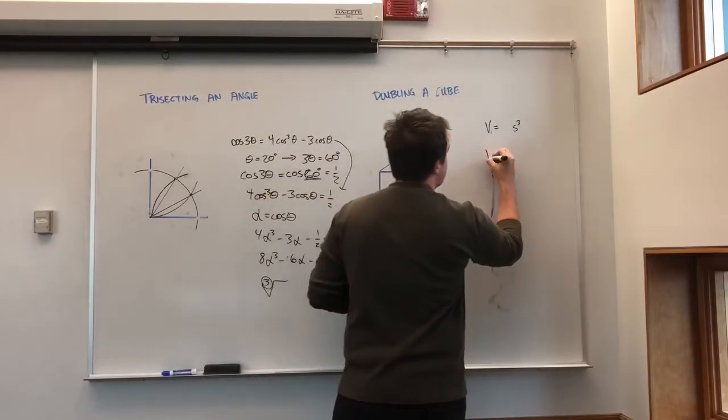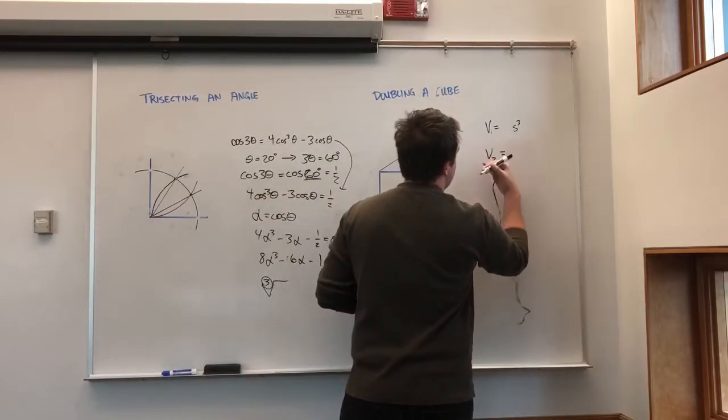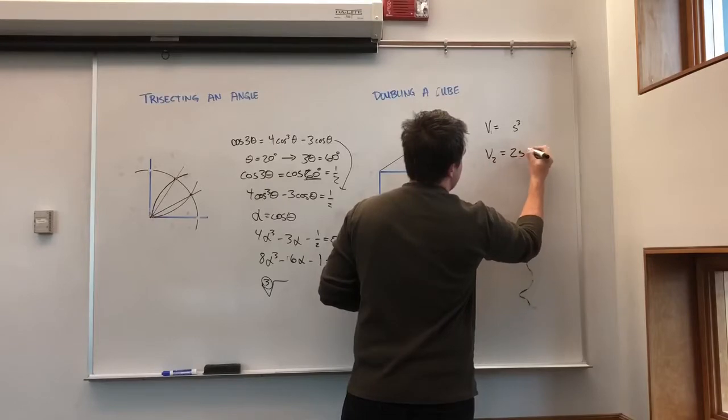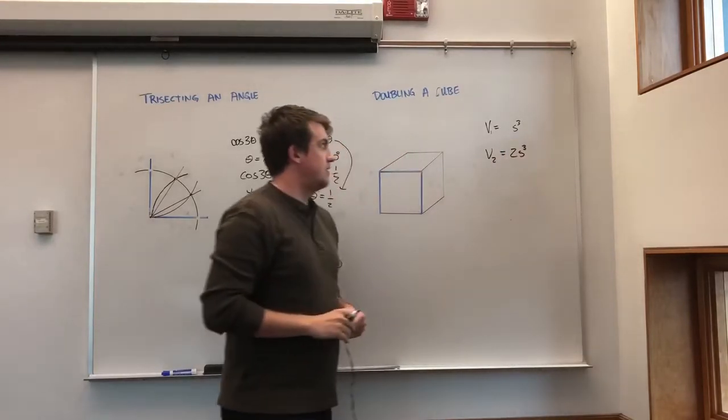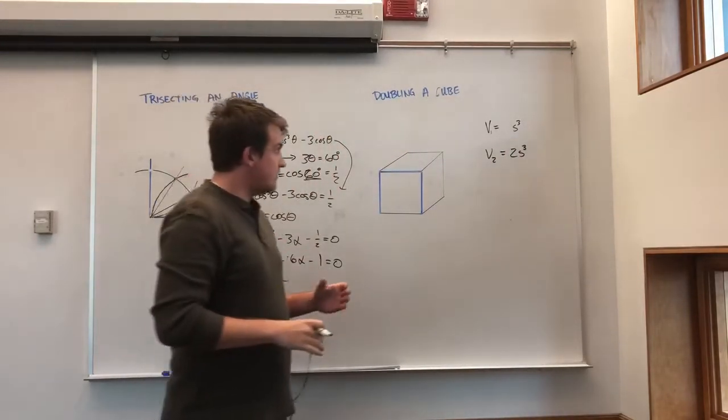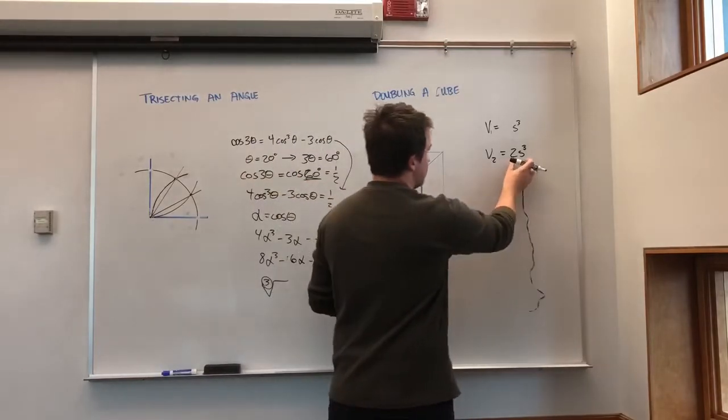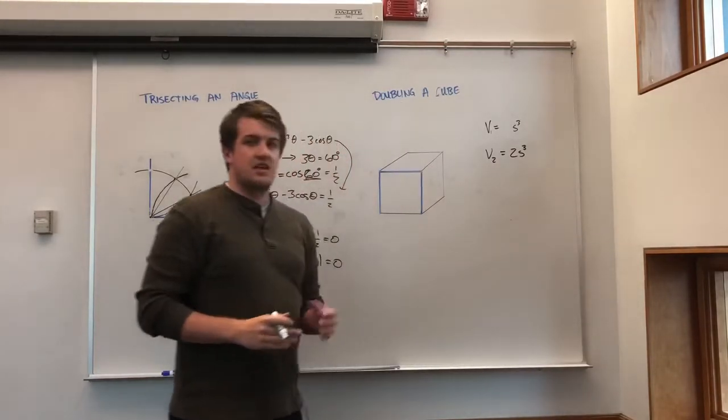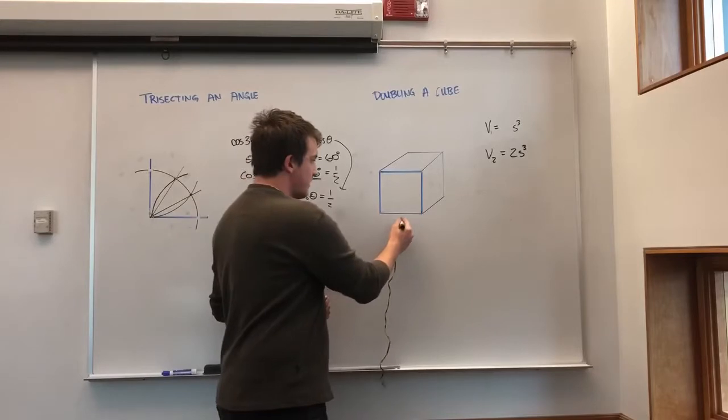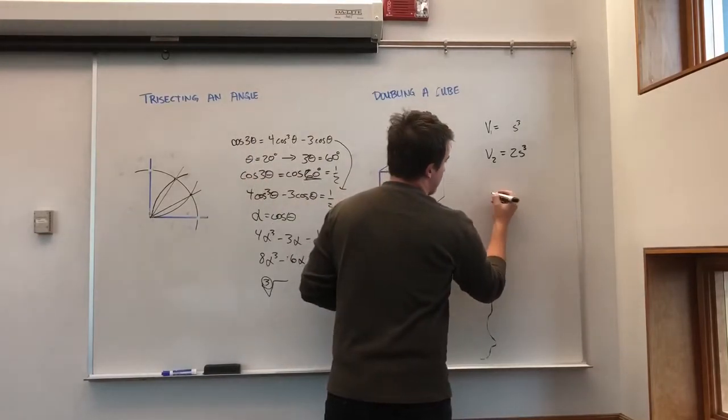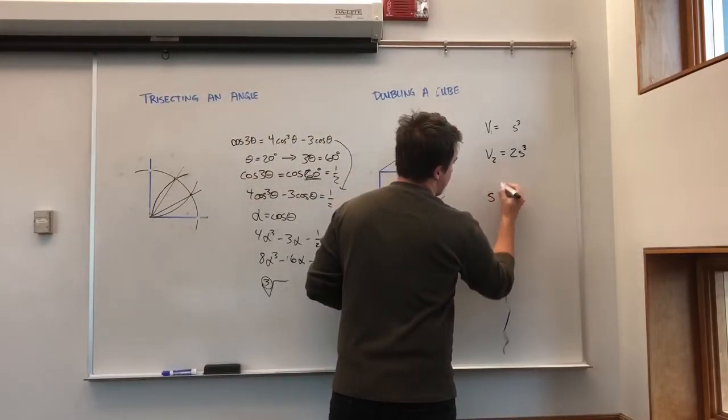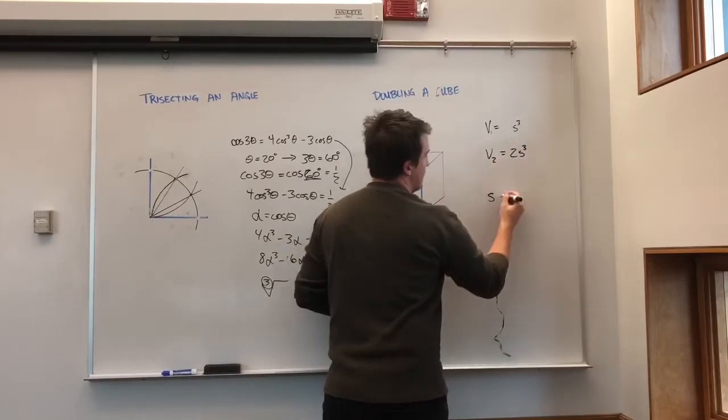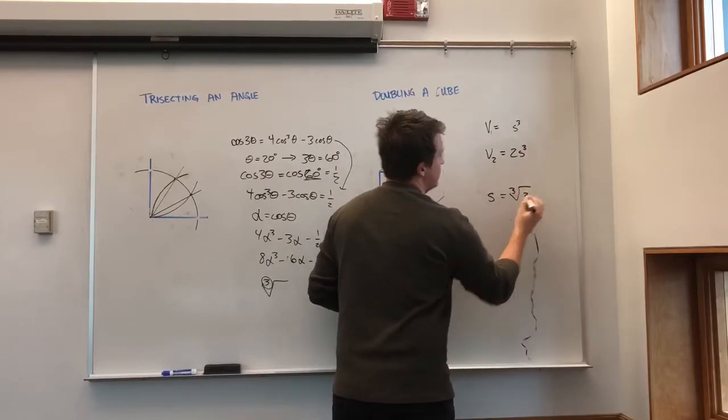Now, if we look, if we wanted to double this, looking at our second volume being the double of the first volume, we would get 2s cubed. Looking at the case of just the side length of 1, we actually will arrive at the volume or the side of this volume equal to the cube root of 2.